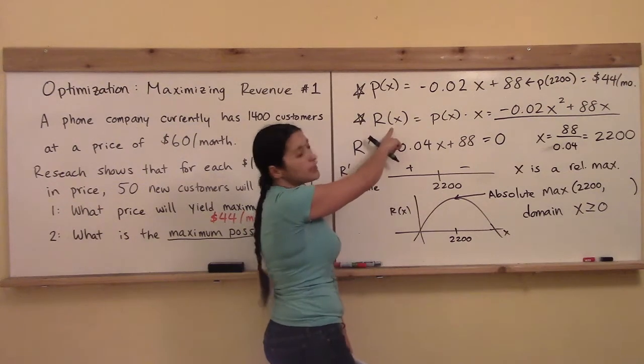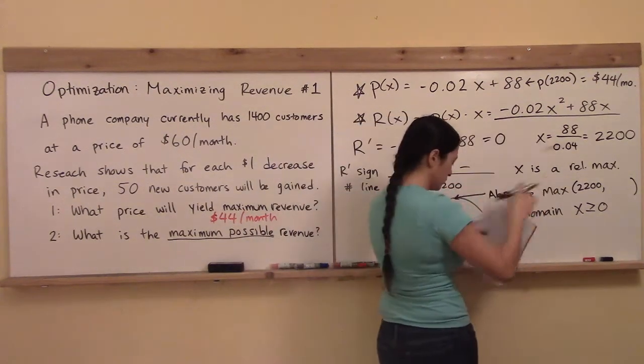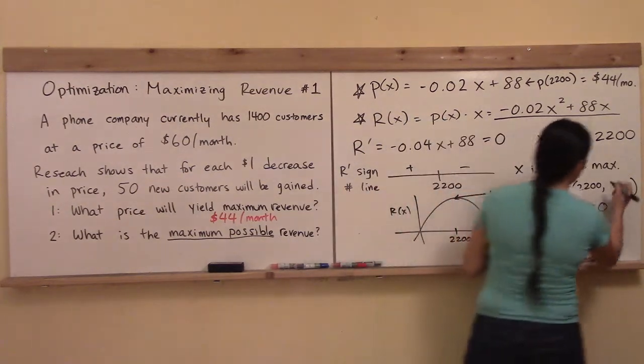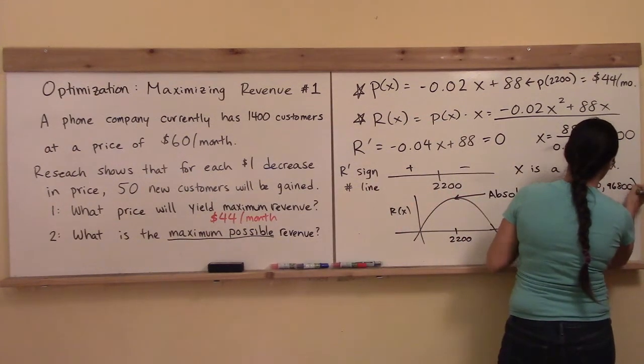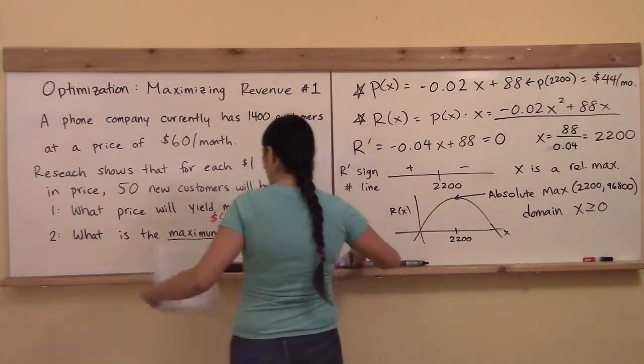So plug in 2,200 right there, and if you plug in 2,200 into here, you should get the number 96,800. Hopefully you got that number.